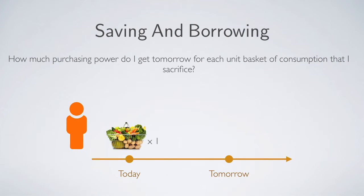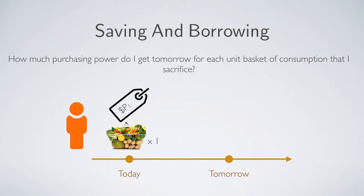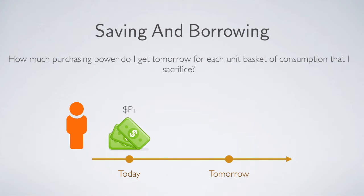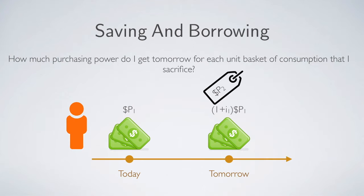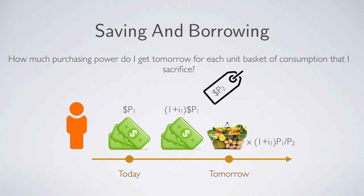If a person is willing to sacrifice eating one basket, and given that this basket costs P1 dollars, then saving this basket now implies he will save P1 dollars in the bank. Given the interest rate to be I1, tomorrow the bank will pay him back P1 times (1 + I1). But the happiness of a consumer comes from consumption, so tomorrow he will use this money to buy a basket. Since the basket price tomorrow may be different, we use P2 to denote the basket price tomorrow. The number of baskets he can buy is P1(1 + I1) divided by P2.